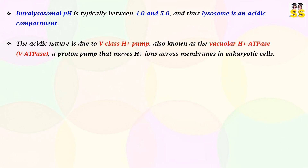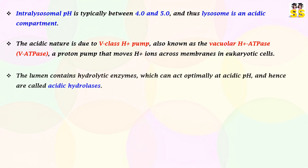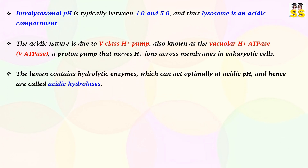The acidic nature is due to a proton pump, known as vacuolar ATPase, that moves H+ ions across membranes in eukaryotic cells. The lumen is filled with hydrolytic enzymes that act optimally at acidic pH. Hence, they are called acidic hydrolases.